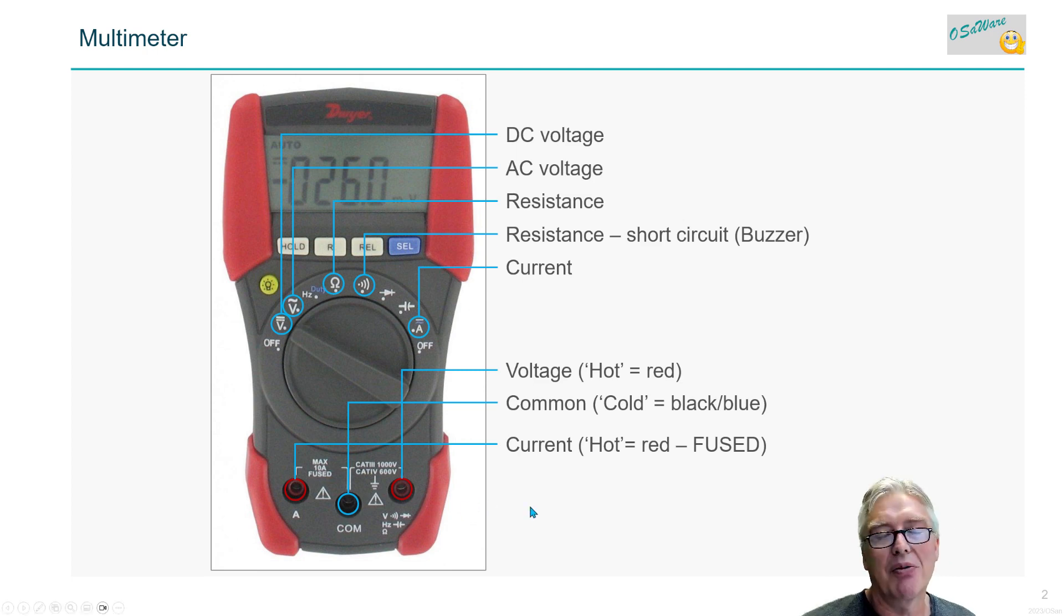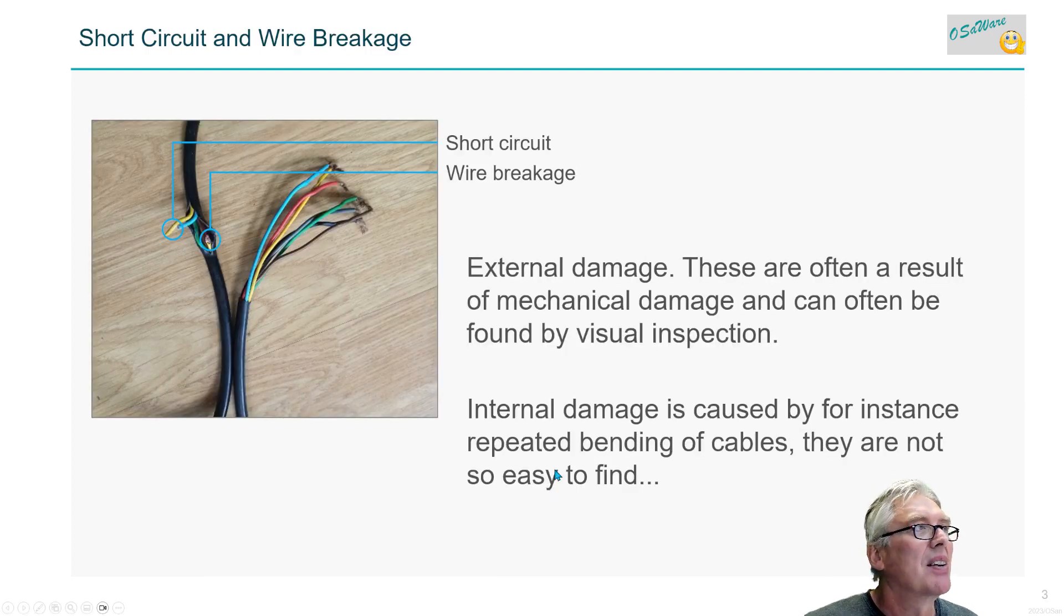We have short circuit and wire breakage in our cables. External damage has mechanical damage and can often be found by visual inspection. Internal damage, for instance repeated bending, is not that easy to locate.